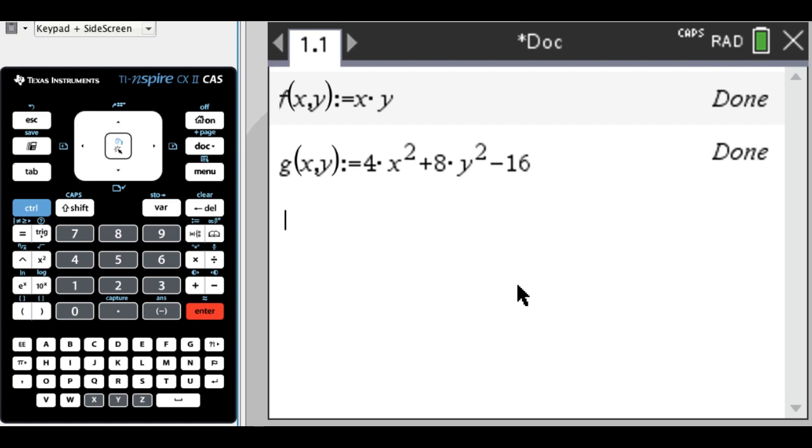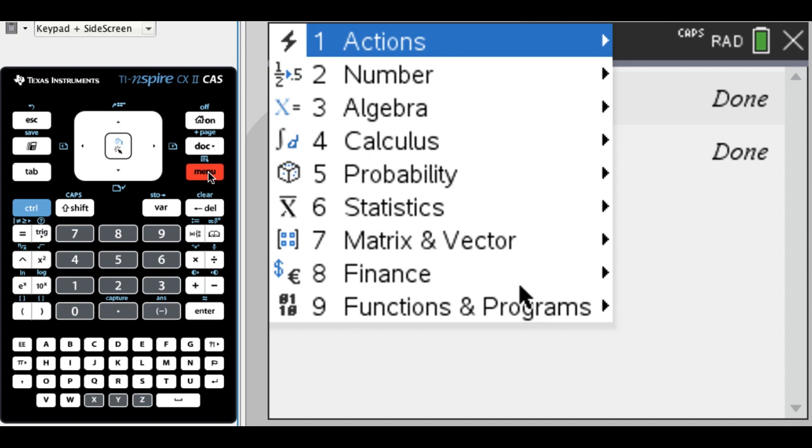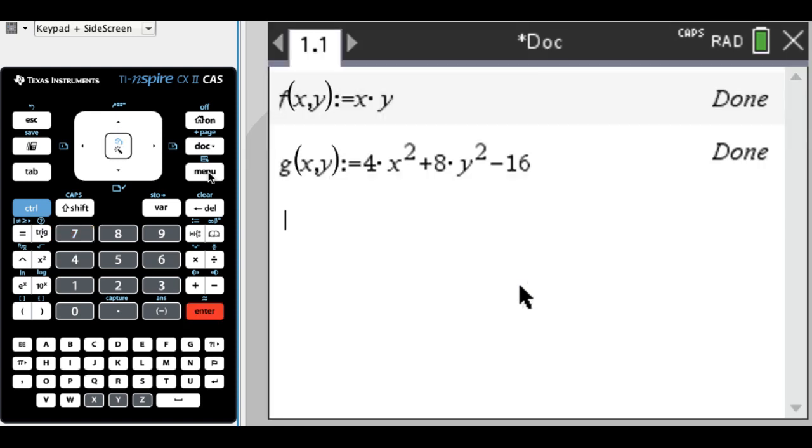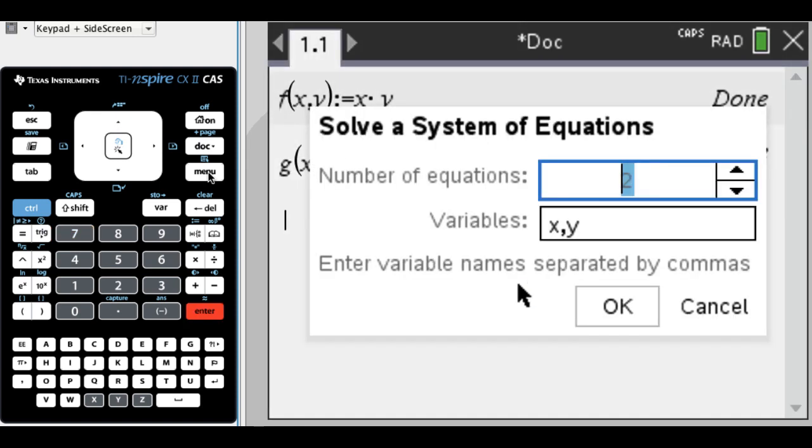It's actually really important to move the 16 over in this case. The original constraint is 4x squared plus 8y squared equals 16, but I moved it over, and then one of the equations I'm going to enter is g of x, y equals 0. Okay, so we have this, and now what we want to do is set up a system to solve. I think the easiest way to do this is to use menu 3, 7, so that's menu algebra, solve system of equations, and I'm going to press enter, and then this is going to be three equations in three unknowns.